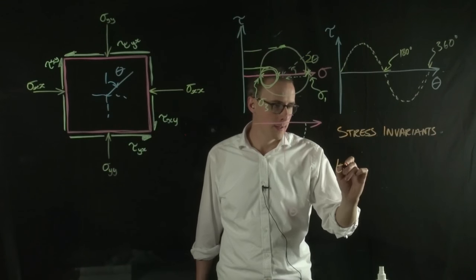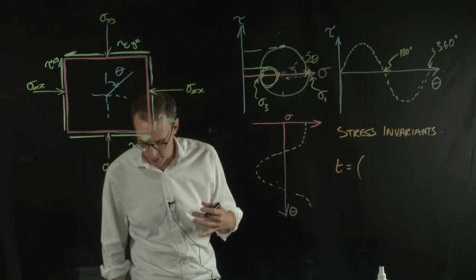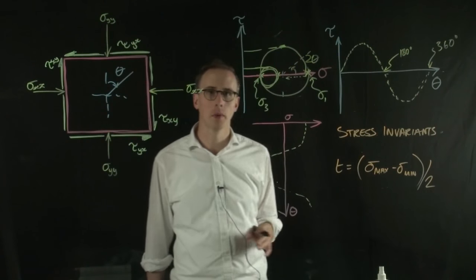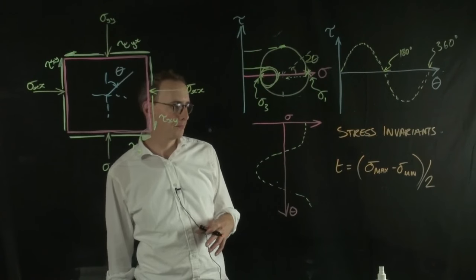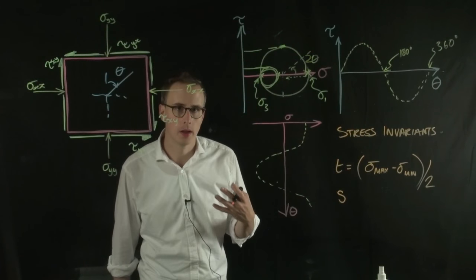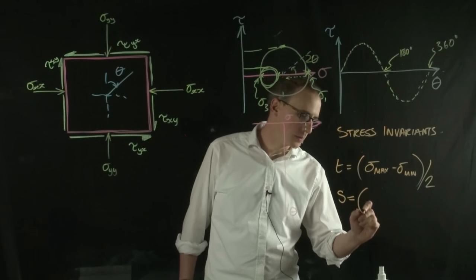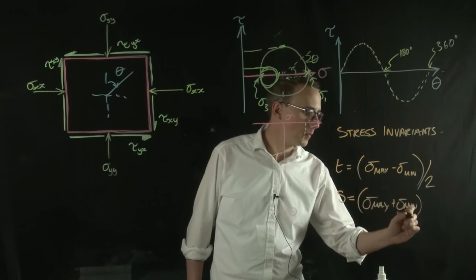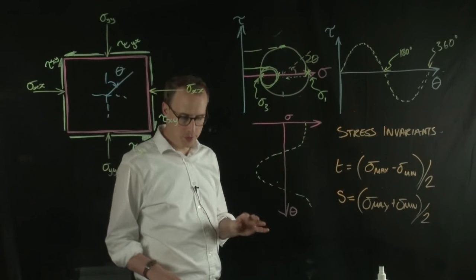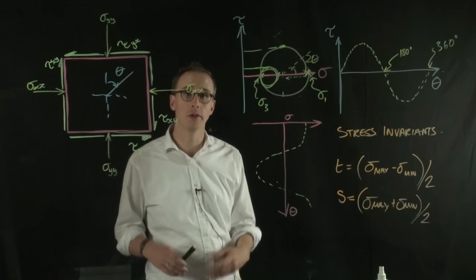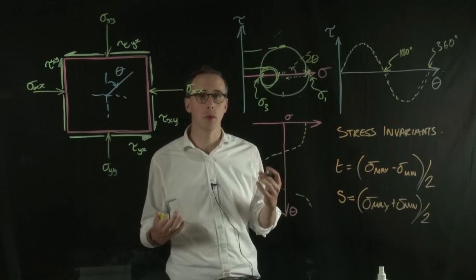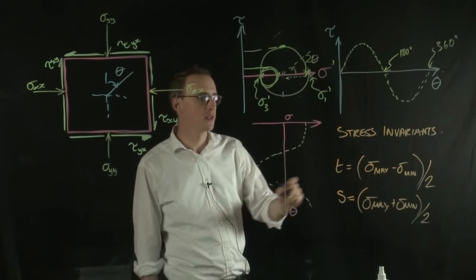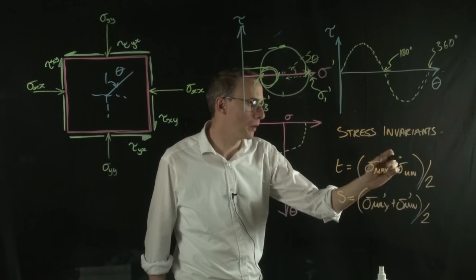The first stress invariant, t, is equal to the radius of the circle, which equals the maximum minus the minimum normal stress divided by 2. The second, s, is the center point of the circle and equals the average stress. It should be pointed out that what we're talking about in all of these situations is effective stress — so all of this is actually effective stress, written as σ′.